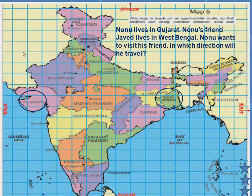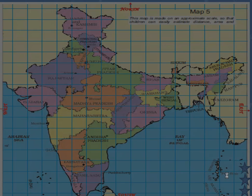If he goes upward it will be North — will he reach Bengal? No. If he goes down it will be South — will he reach? No. So which side does he have to go? He has to travel in the East direction.